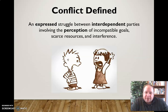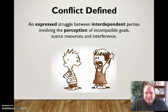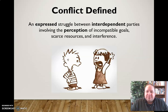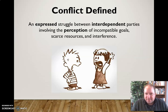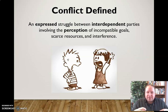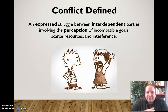Between interdependent parties — what we mean by that is parties who are connected in some way. If you can just walk away, then it's not really conflict. You may have a fight or a struggle of some sort, but it's not really conflict in the traditional definition because conflict involves interdependent parties. By interdependent, we mean that what happens to one affects the other person in some way — like ripples on a pond when you throw a pebble. Those ripples are going to affect everybody involved.